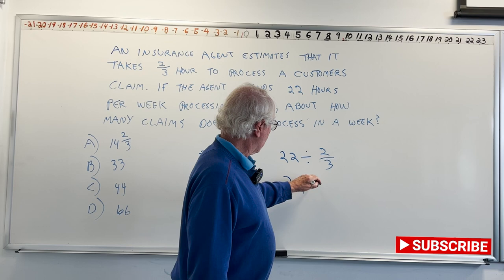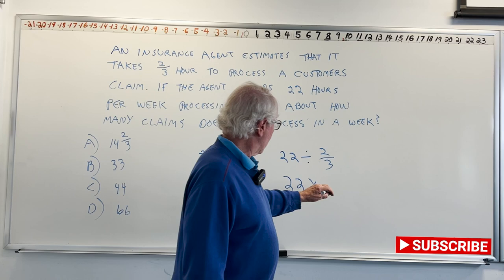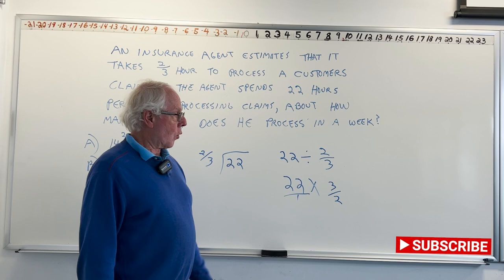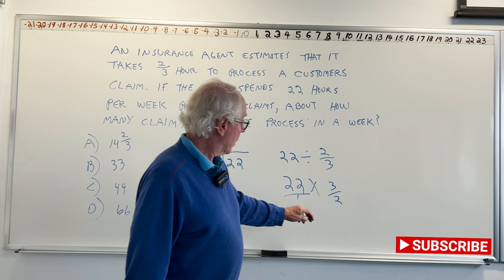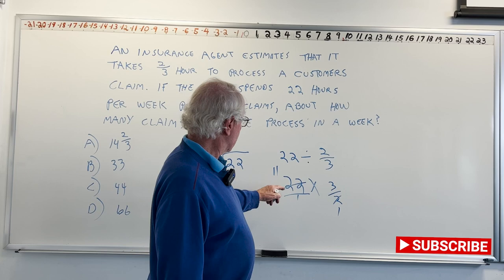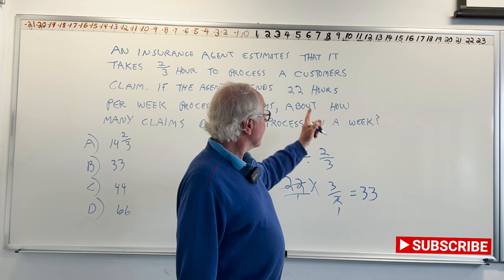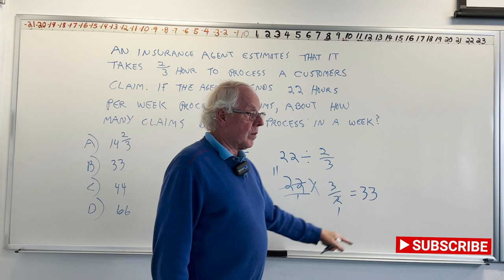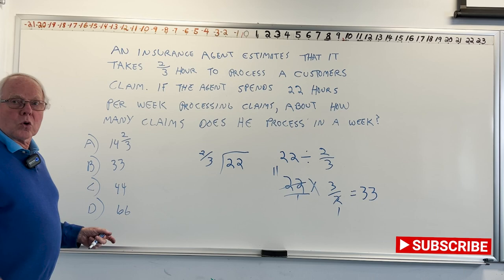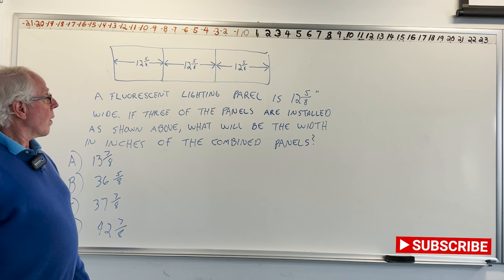It's the same thing. And we know that we can solve this by changing this to a multiplication problem and inverting that fraction or using its reciprocal, which is 3 over 2. I put that 1 there just so they both look like fractions. And now look, we caught a break with the canceling. 2 goes into 2 once. 2 goes into 22, 11. 3 times 11 is 33. So indeed, since he does each of them in less than an hour, the number is going to be bigger than 22. And there it is. 33. We'll do one more. And that'll be it for today.